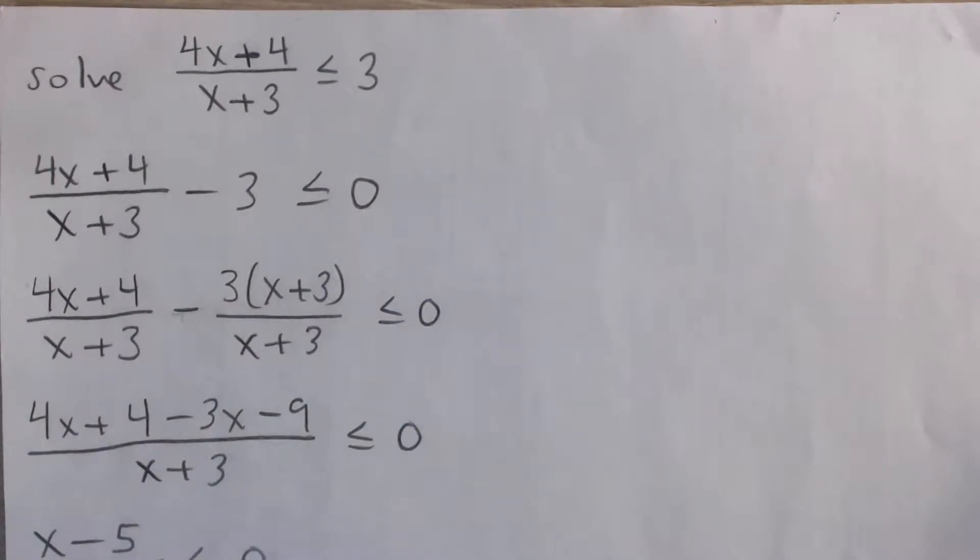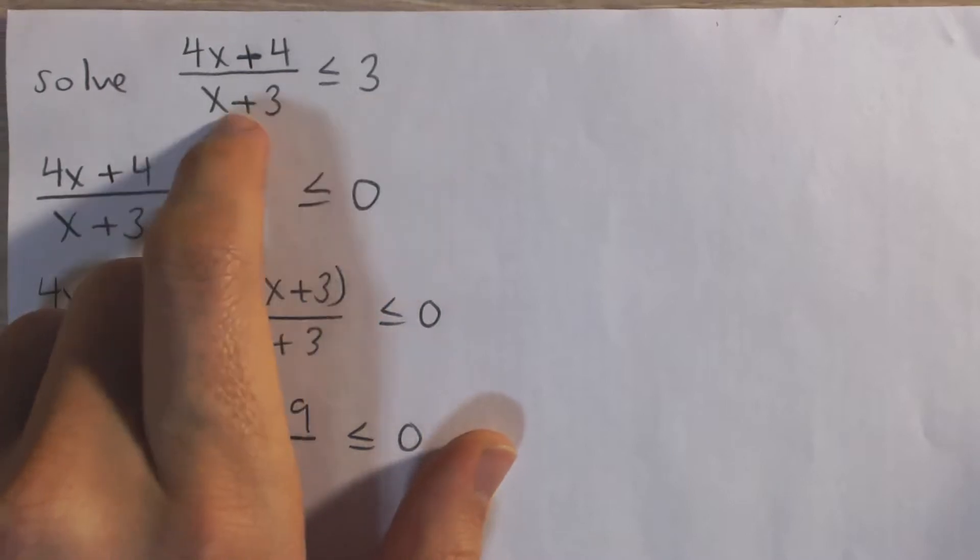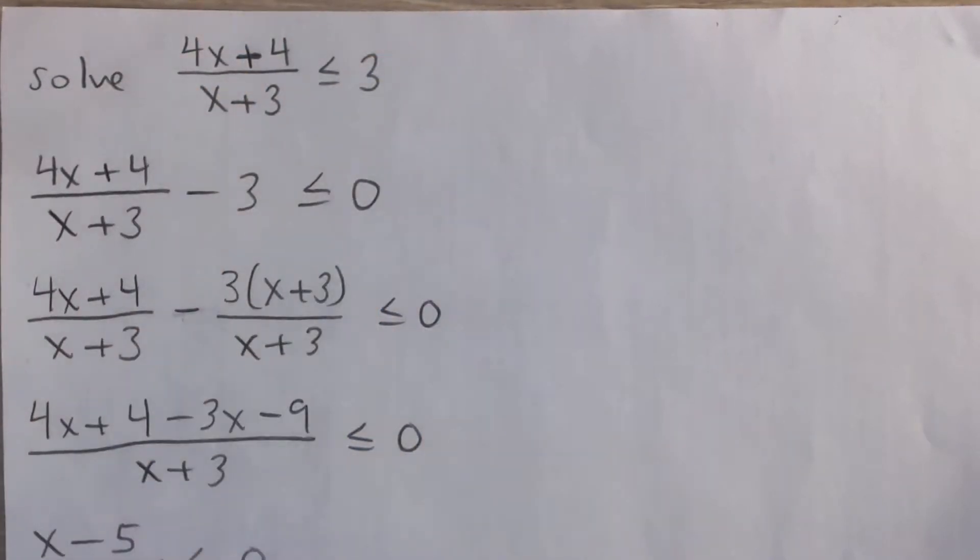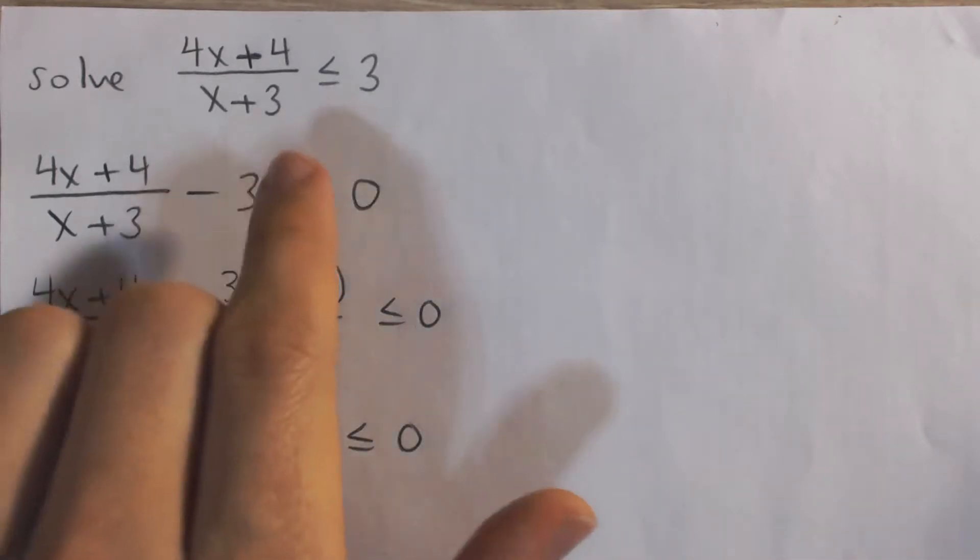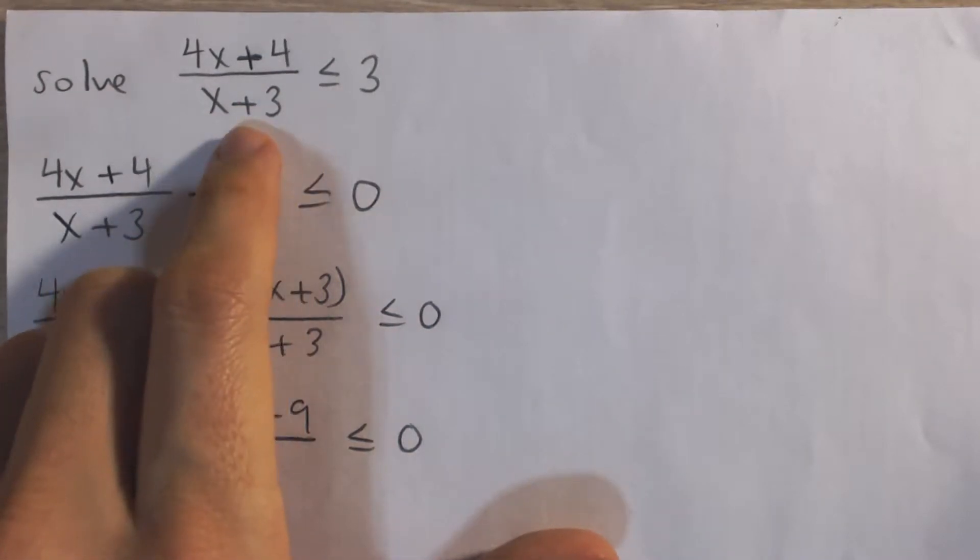Now at first you might think we can just multiply both sides by x plus 3, get rid of that denominator, and now all we'll have is a linear inequality which we can solve just moving some terms around. Except that kind of messes things up because we don't know if x plus 3 is a positive number or a negative number.